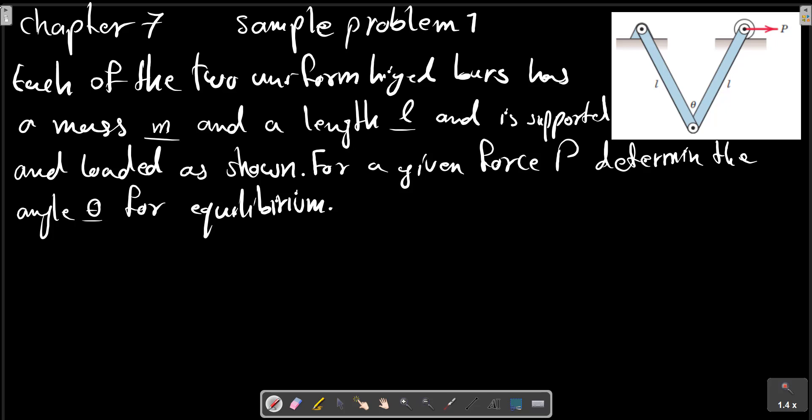Chapter 7, sample problem 1. Each of the two uniform hinge bars has a mass m and a length l and is supported and loaded as shown. For a given force P, determine the angle theta for equilibrium.